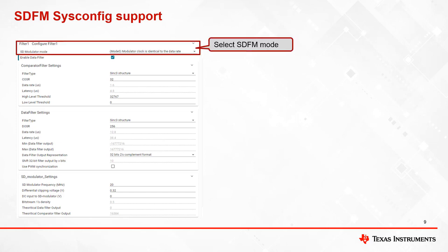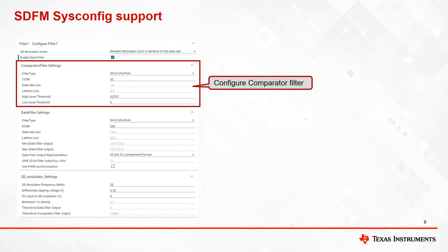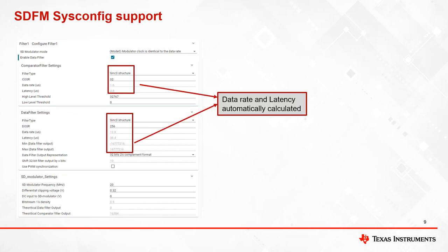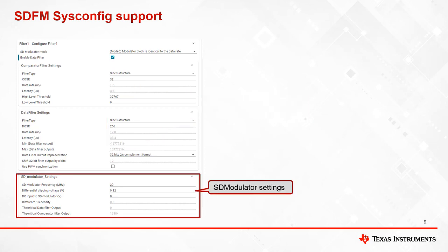This section is used to select one of the four modes supported by SDFM. The comparator filter settings drop-down allows you to configure comparator filter settings, filter type, OSR, and threshold settings. The data filter settings drop-down allows you to select the data filter's filter type, OSR settings, 32-bit or 16-bit data representation, and enable or disable SD sync event. Data rate and latency are automatically calculated for the selected filter type and OSR settings for both filters. SD modulator settings entered here are used to calculate the theoretical filter output for both the data filter and comparator filter.